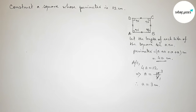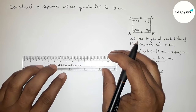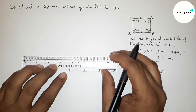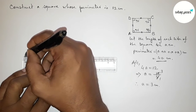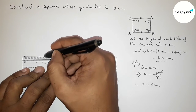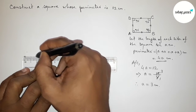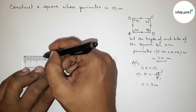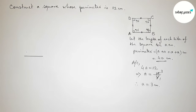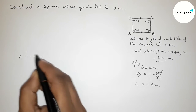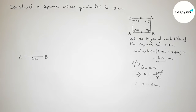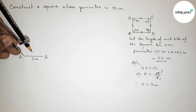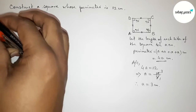Now we have to construct a square of side 3 centimeters. First, drawing a line segment of length 3 centimeters — starting from 0, marking 1, 2, 3. This is the 3 centimeter line segment, with point A at one end and point B at the other. Next, we have to draw a 90 degree angle at point A.